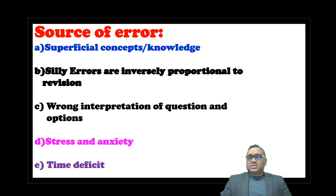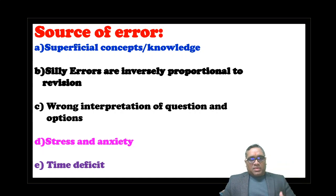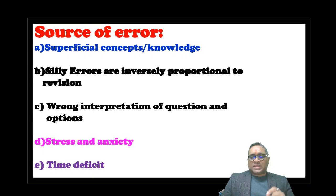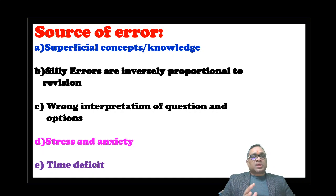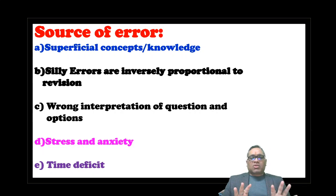The fourth source is stress and anxiety — everyone has it, even toppers — but you must learn to overcome it. It comes from peer pressure or family pressure: 'What will happen if I don't get a top rank?' Just remember: does anyone ask about your tenth grade marks today? No. This is just an exam, not your entire life. Don't think unnecessary thoughts about outcomes ruining your future.